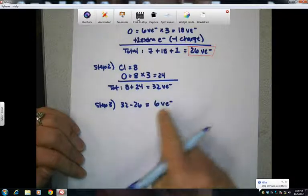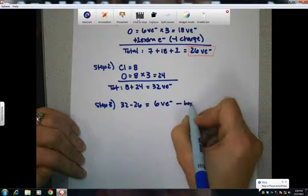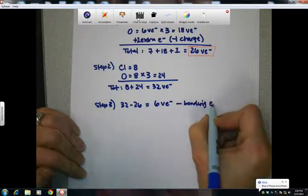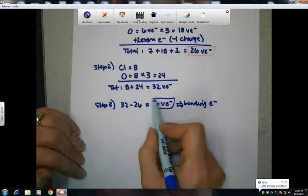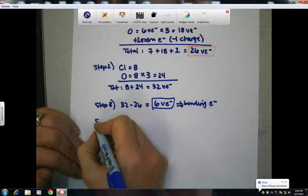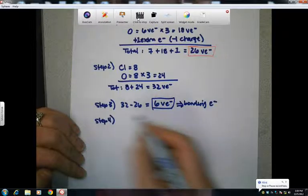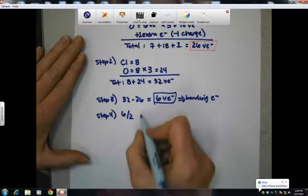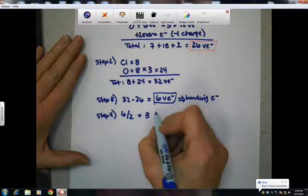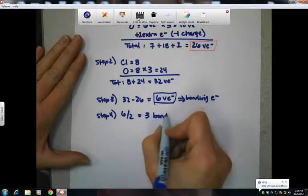So that should be how many electrons are involved in our bond. Step four, we're going to divide that by two because, remember, there are two electrons in a bond. And that means that there will be three bonds in our compound.